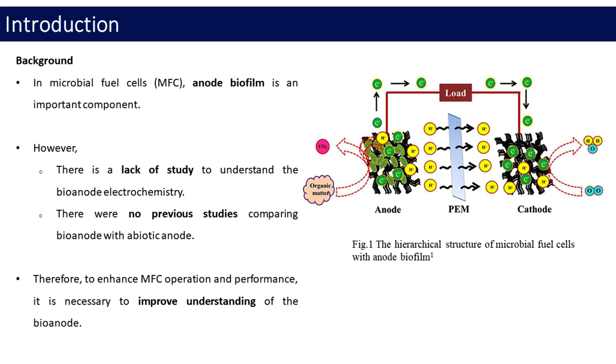The main enzymatic components for electrogenesis is exoelectrogens. Microorganisms are able for the extracellular electron transfer. It was found can increase power density and capacitance, and decreased charge transfer resistance.